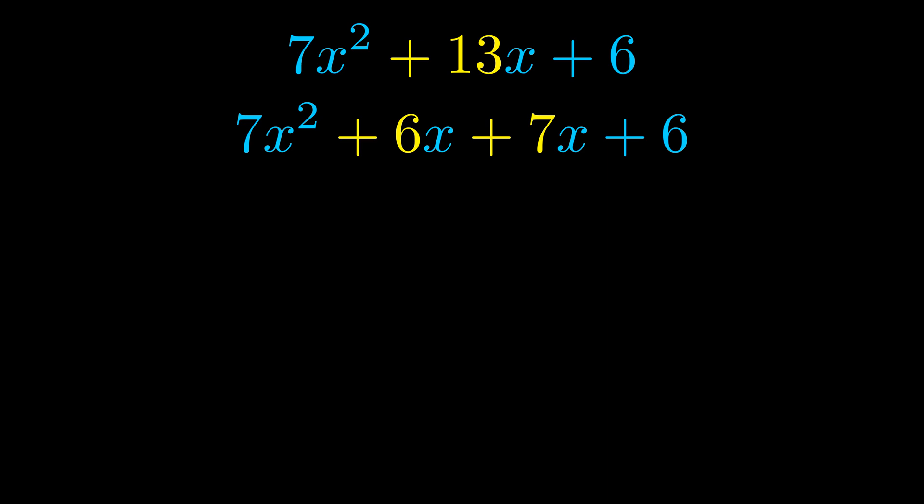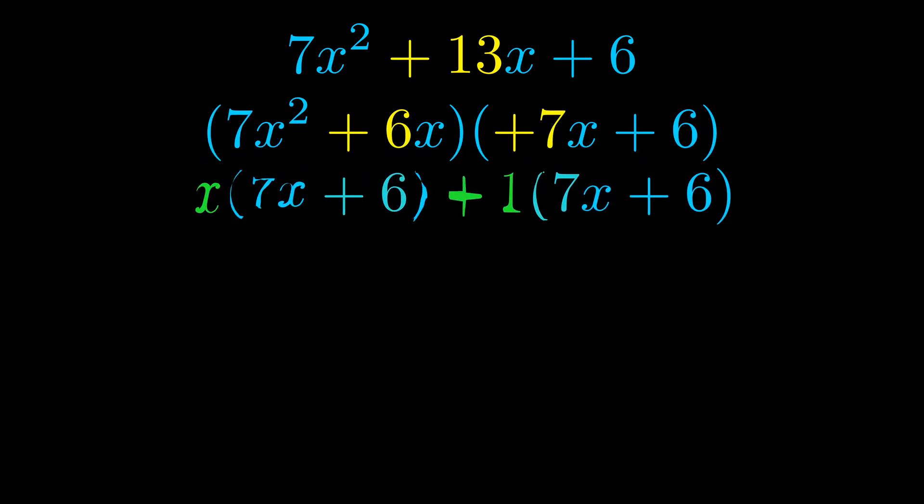Once we've done this we go ahead and put parentheses around the first term and the last term. And we do that so that we can take the greatest common factor out of both terms. We can see the greatest common factor is now outside in green.